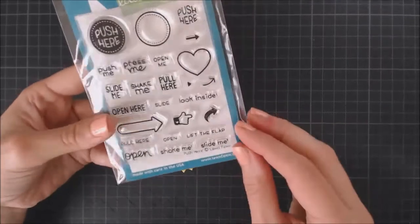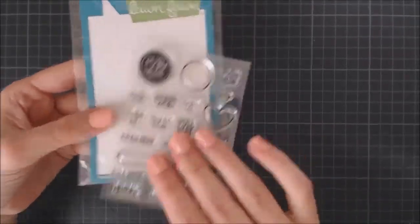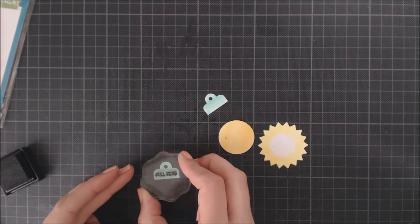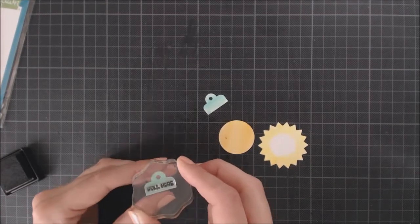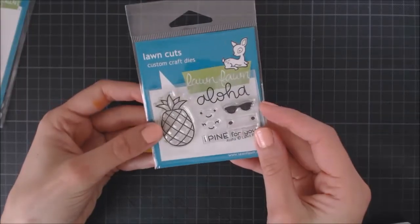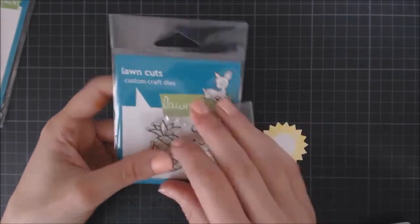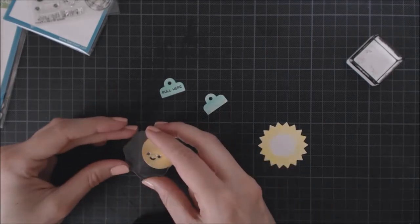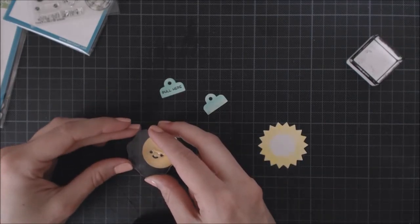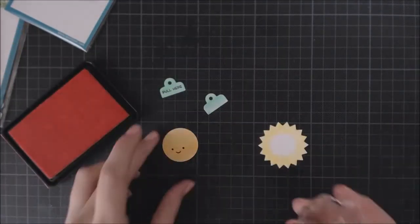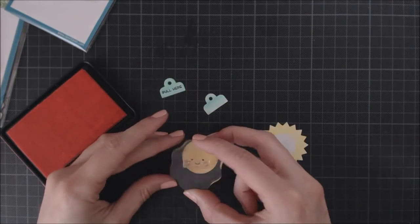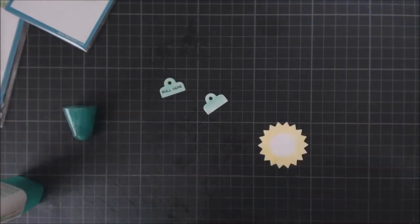Now I'm going to add some instructions for the recipient of my card, stamping on my little tab this pull here sentiment from the Push Here stamp set. I thought it would be super fun to add a smiley face to the sun and it happens that the Aloha stamp set has the perfect one, so I'm going to stamp it with some black ink and add the blush as well using some bubblegum ink. It looks adorable, don't you think?